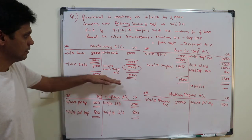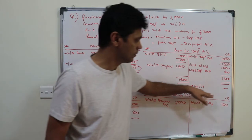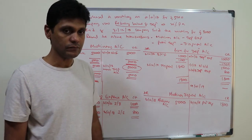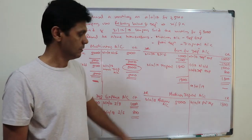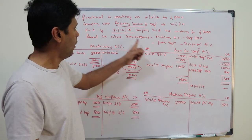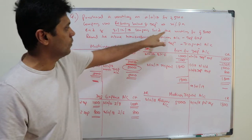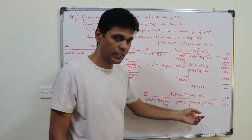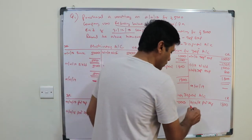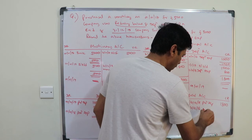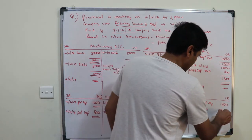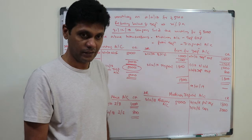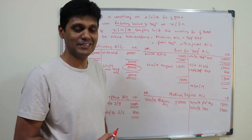We have now removed and zeroed out both accounts. The third step is to record the sales proceeds. The company sold the machinery for three thousand pounds. Debit cash and credit the disposal account three thousand on 31st December 2018. Notice the book value was three thousand two hundred but it was sold for three thousand, so there is a loss of two hundred.